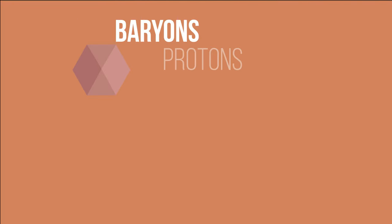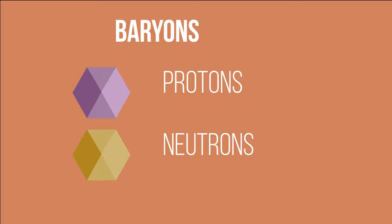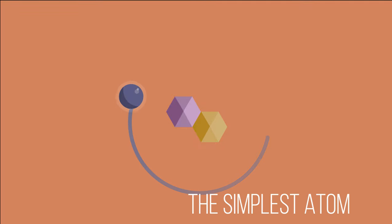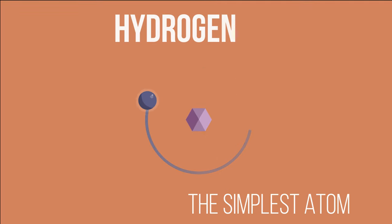Baryons include protons and neutrons, which make up the nucleus of the atom. The atom is the fundamental building block for all matter. The simplest atom, hydrogen, requires one electron orbiting a single proton.